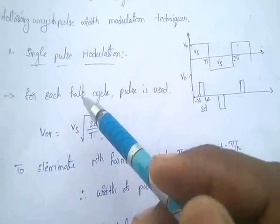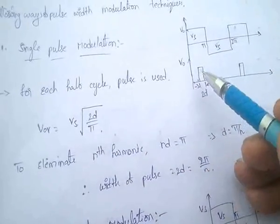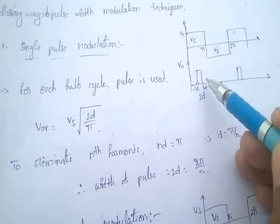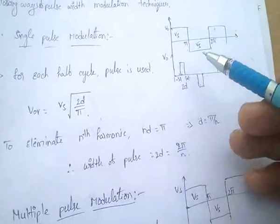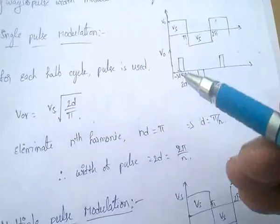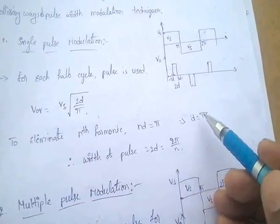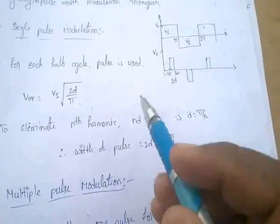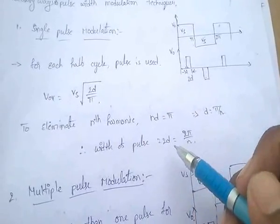For single pulse modulation, only one single pulse is used for each half cycle. The output RMS voltage equals VS multiplied by root of (2d/π). To eliminate the nth harmonic, nd equals π so d equals π/n. The width of the pulse is 2d, which equals 2π/n — very important. For multiple pulse modulation, more than one pulse is used for each half cycle, and the output RMS voltage is also VS × root(2d/π). A triangular carrier wave and a reference voltage waveform are used; their intersections determine the output pulses.